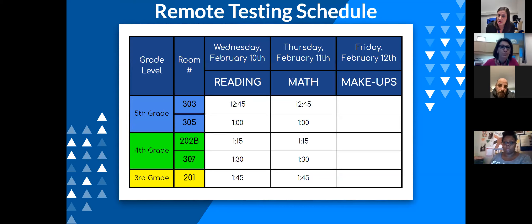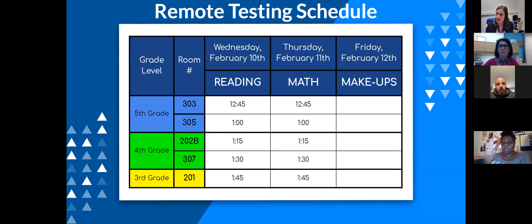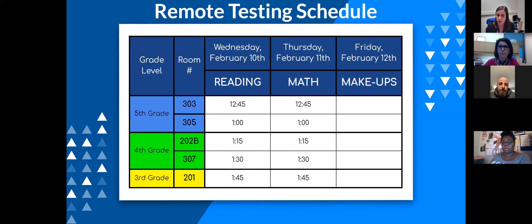For students choosing remote testing at home, they will test with their classroom teachers via Zoom on Wednesday, February 10th and Thursday, February 11th. They'll start with reading and then move on to math — the same practice they've always followed. Testing will be in the afternoon after the lunch break, because special area classes and additional services like EL classes are provided in the morning. Students testing in person on those days will have an alternative assignment posted by teachers, so no instructional time is lost.